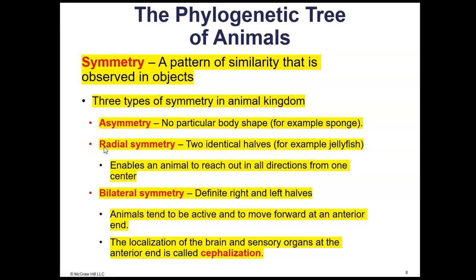Think about a jellyfish. If you could cut a jellyfish in half to get two identical halves, there are many different ways you could do that — you can make a vertical cut, a horizontal cut, or any number of diagonal cuts. If you cut all the way through and made two identical halves, there are many options. So that makes it radial symmetry. Radial symmetry enables an animal to reach out in all directions from one center.